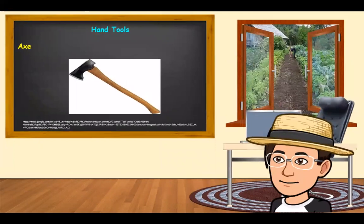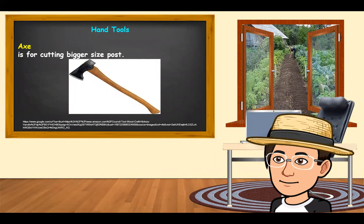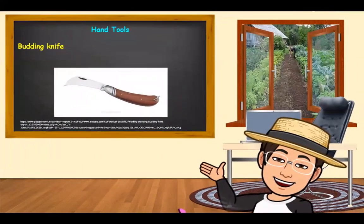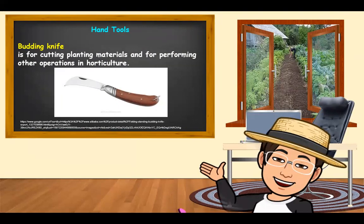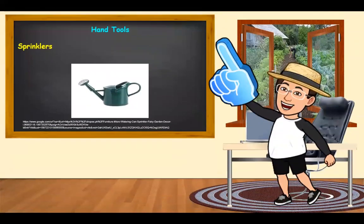Another hand tool is what we call the axe. An axe is for cutting bigger size posts. Next hand tool is what we call the budding knife. A budding knife is for cutting planting materials and for performing other operations in horticulture such as budding and grafting. Another hand tool is what we call sprinklers, which are normally used for watering seedlings and young plants.